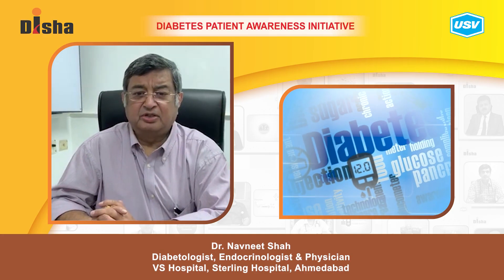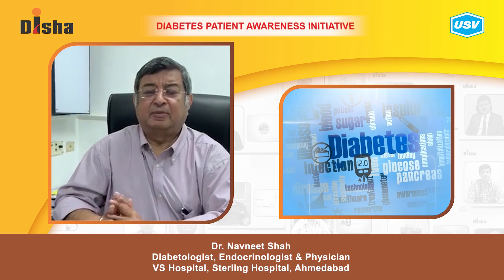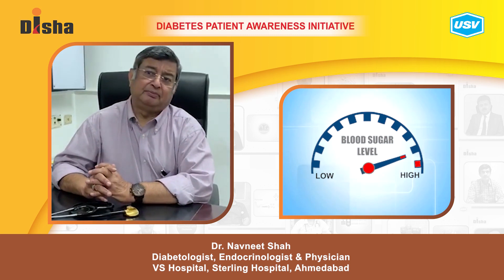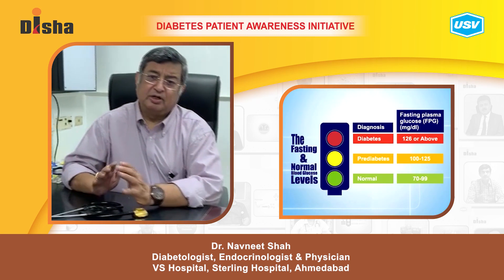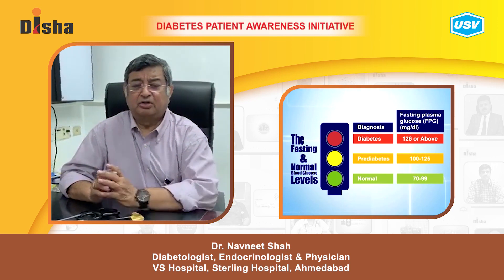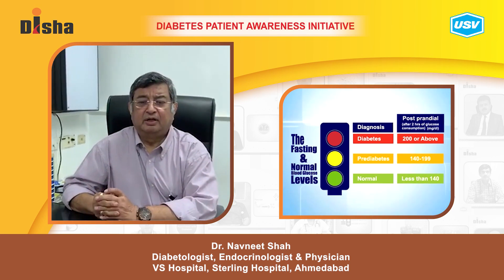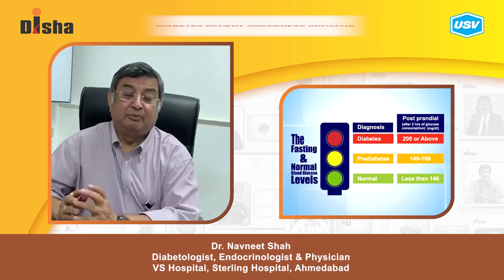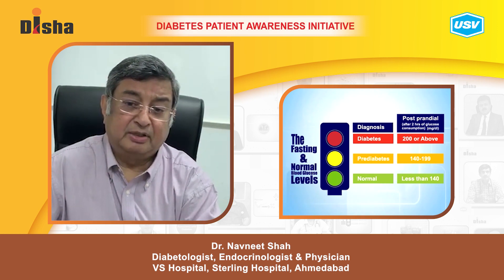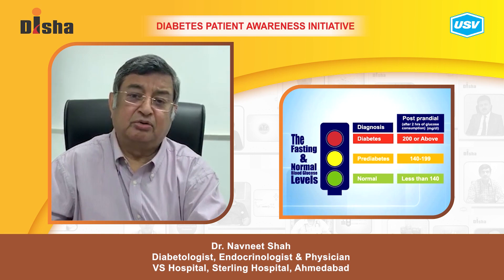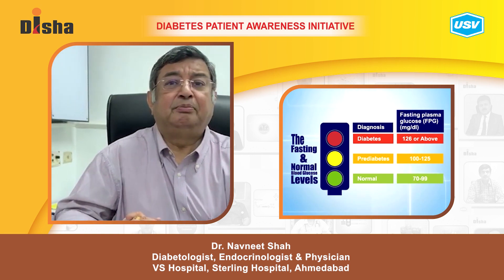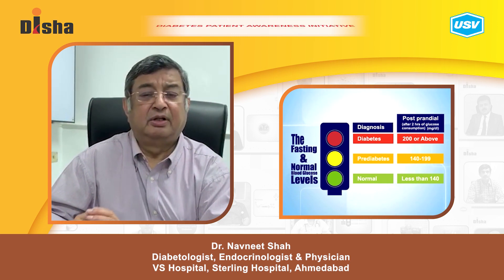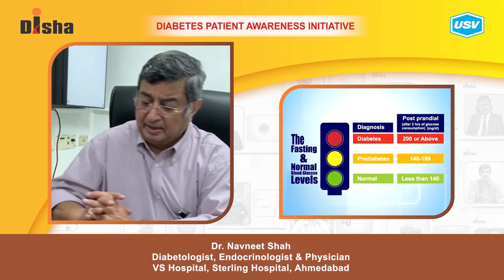Diabetes mellitus is a metabolic disorder characterized by high levels of blood sugar. Normal fasting blood sugar should be less than 100 mg per deciliter, and 2 hours after a meal should be less than 140 mg per deciliter. Diabetes is diagnosed when fasting blood sugar goes above 126 mg per deciliter or postprandial blood sugar goes above 200 mg per deciliter.